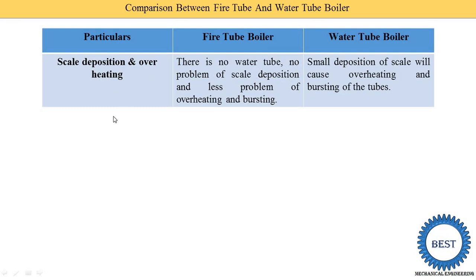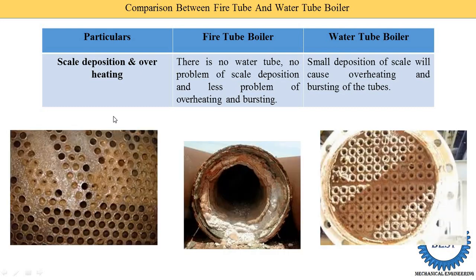Third is on the basis of scale depositions and overheating. What is scale deposition? When anything is used with the water it starts to deposit — that is known as scale deposition. Here I show you some images. This is the boiler and this is the side view of the boiler. When the boiler is a water tube — meaning water is passing inside the tube — a small deposition of scale will cause overheating and rusting of the tubes. Inside the tube this type of scaling is done, and due to the scaling overheating happens and the area for water flow is also reduced. But in a fire tube boiler, water is outside the tube and fire is inside the tube, meaning there is no water inside the tube, so no problem of scale depositions and less problem of overheating and rusting.